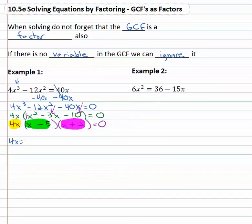So we say 4x = 0, x - 5 = 0 and x + 2 = 0. All three of them and then we solve.